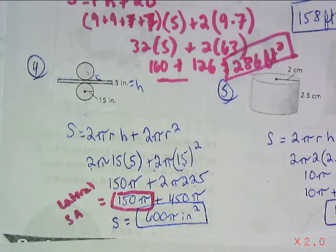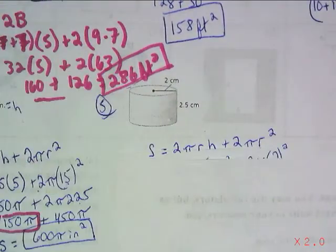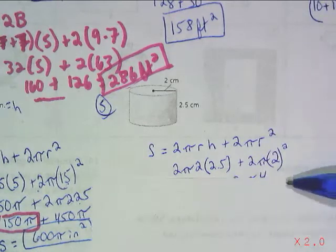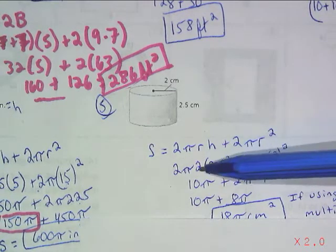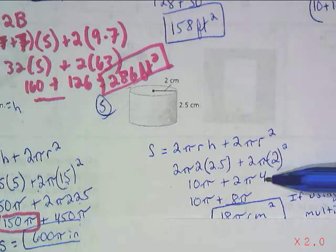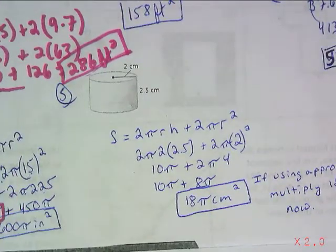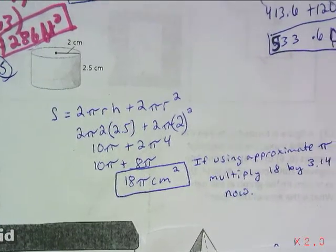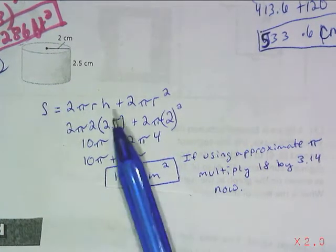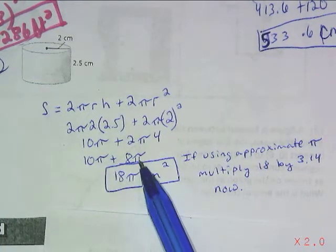For number 5, the cylinder is shown in three-dimensional form using the exact same formula. The radius is 2, the height between the two bases is 2.5, and again the radius is 2. 2 times 2 times 2.5 is 10, giving 10π for the lateral part. For the bases, 2 squared is 4, times 2 is 8, giving 8π. So 10π plus 8π is 18π. Put your units at the end. If asked for an approximate answer, multiply 18 times 3.14 at the very end — keep all work in exact pi until then.